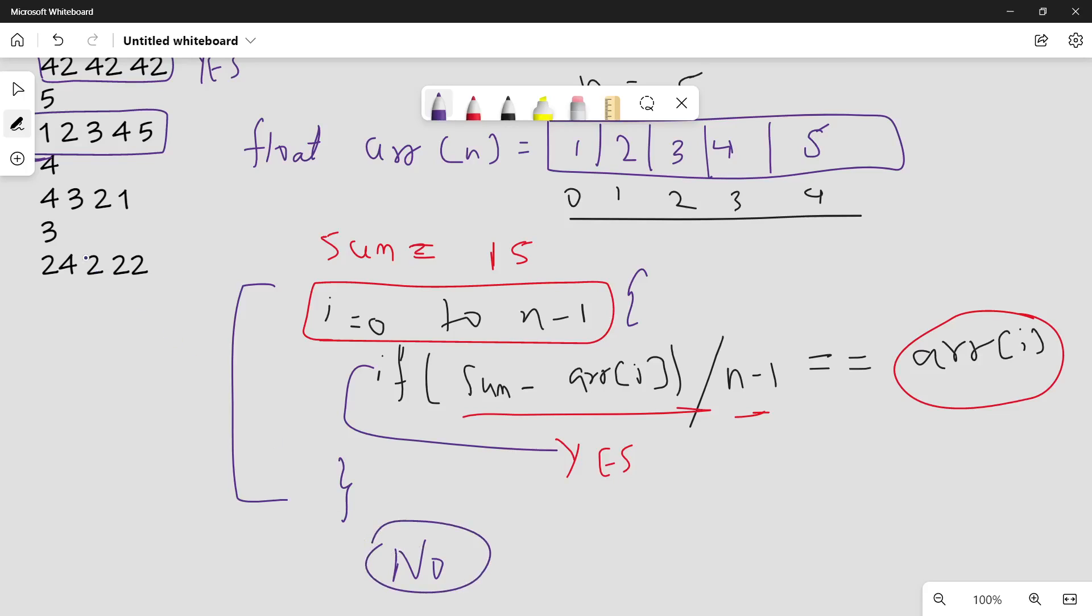In this case, let's take this example. Here sum equals 24 plus 2, which is 26 plus 22, sum of all this which is 48. For the zeroth element, check whether 48 minus 24, which is 24, divided by n minus 1 (here n is 3, so by 2), so 48 minus 24 which is 24 by 2 which is 12. Is this element equal to 12? No.